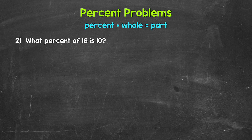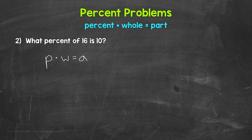Let's move on to number 2. We have: what percent of 16 is 10? The wording is a little different than number 1, but it's the same type of problem. Writing our equation: percent times whole equals part. What percent — the percent is unknown; of 16 — so 16 is the whole; is 10 — so 10 is the part. With the percent being unknown, we have P times 16 equals 10.